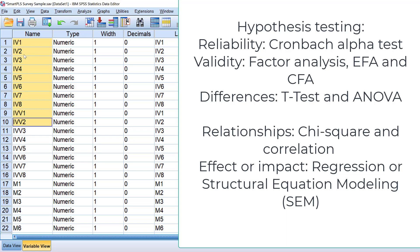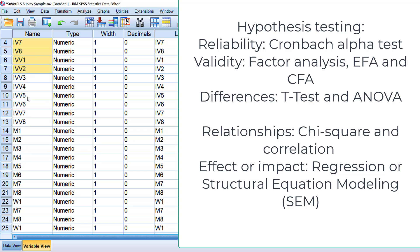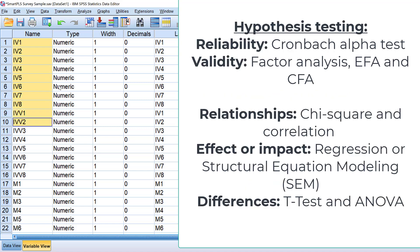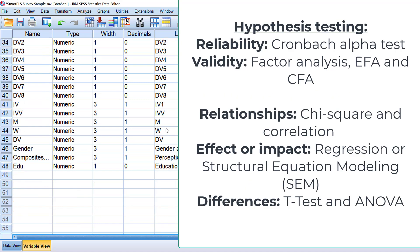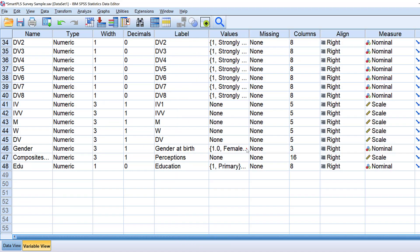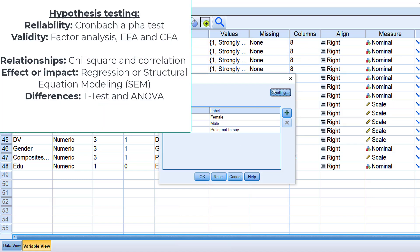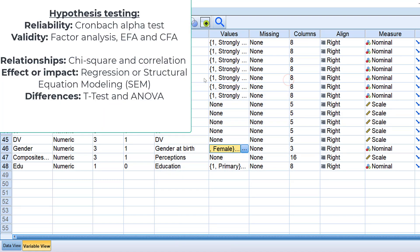For example, we can test the impact of motivation and dedication on school achievement — the more motivated you are, the better grades you get. We also have hypotheses that test differences, like whether there is any statistically significant difference between males and females in terms of motivation.